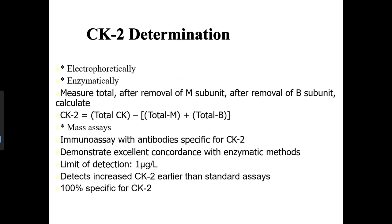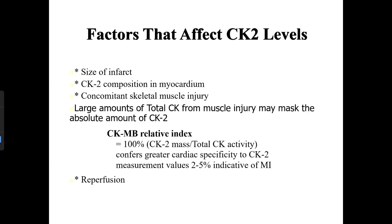CK2 can be determined electrophoretically or enzymatically by measuring total CK after removal of the M and B subunits. The formula is: CK2 = total CK − (total M + total B). Immunoassay with antibodies specific for CK2 shows excellent accordance with enzymatic methods. Factors affecting CK2 levels include the size of the infarct, CK2 composition in the myocardium, and contamination with skeletal muscle injury — large amounts of total CK from muscle injury may mask the absolute amount of CK2.